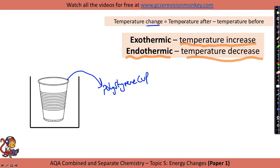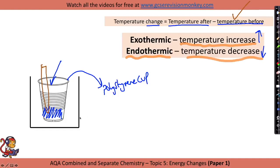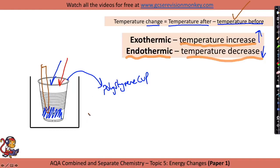To get the temperature change, we measure the temperature after the reaction and take away the temperature before. If it's an exothermic reaction, that'll be a temperature increase; if it's endothermic, we would see a temperature decrease. We put one reactant inside the cup and measure its temperature before with a thermometer, then add the second reactant and measure the highest or lowest temperature reached, depending on whether it's exothermic or endothermic.